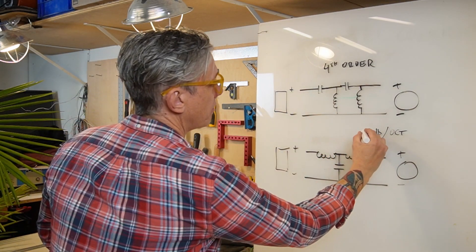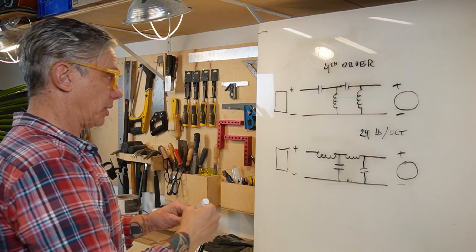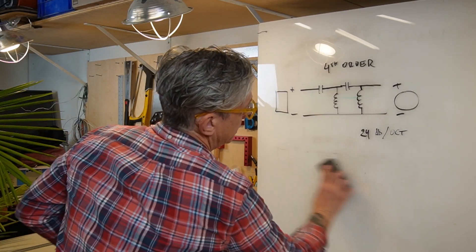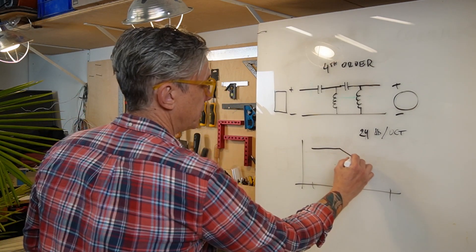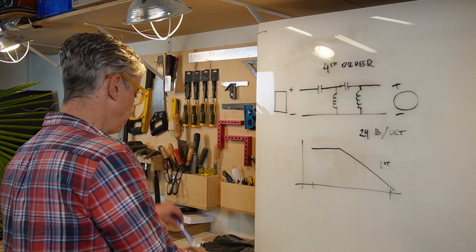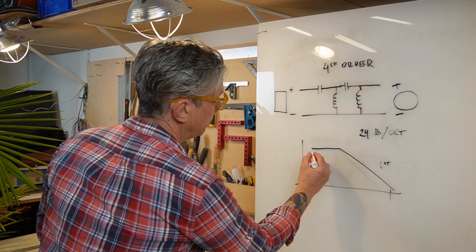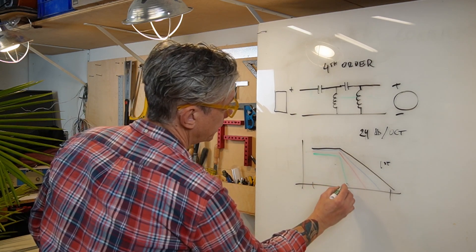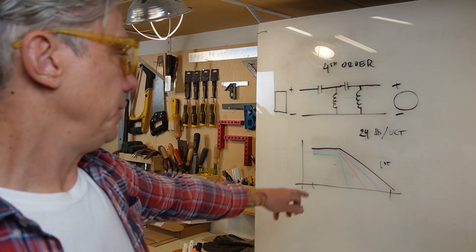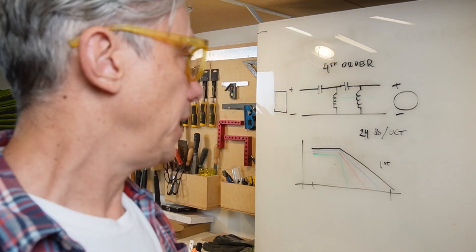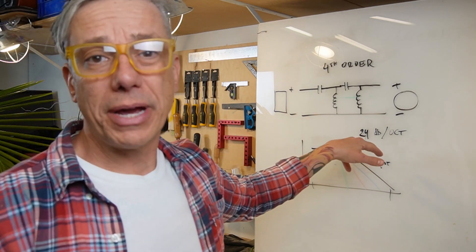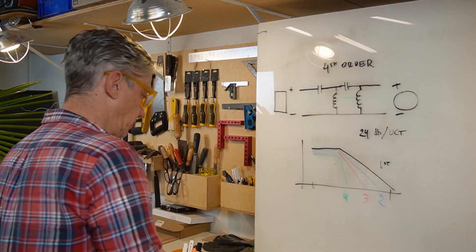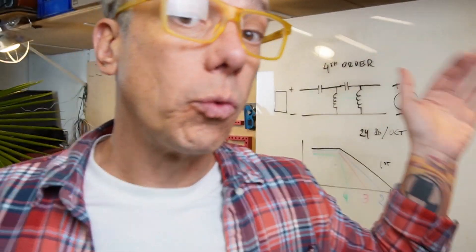We have a graph here showing first order filter, then second, then third order, and then fourth order. You can see it changes the slopes because the attenuation ratio changes — this is fourth, third, second. Those markers are a bit rough, but you can see the slope gets steeper with each order.